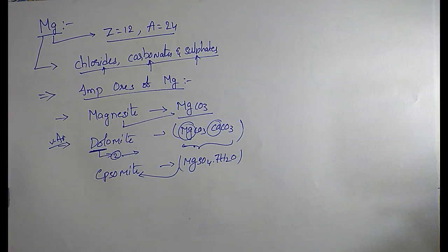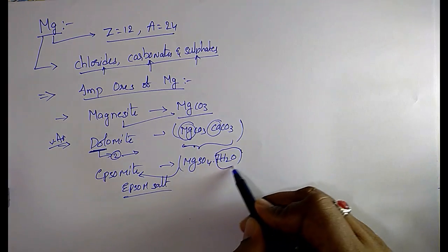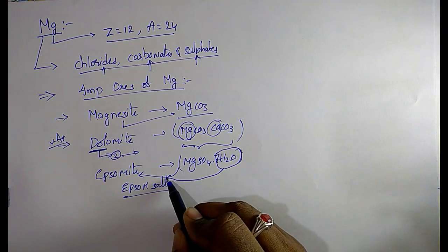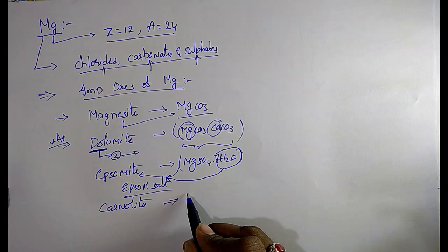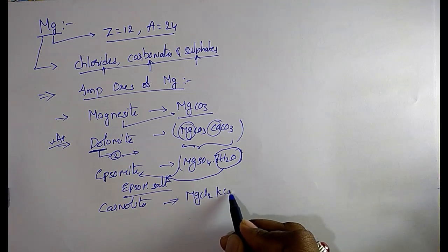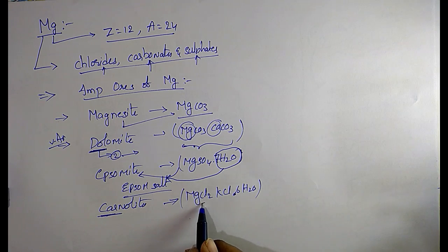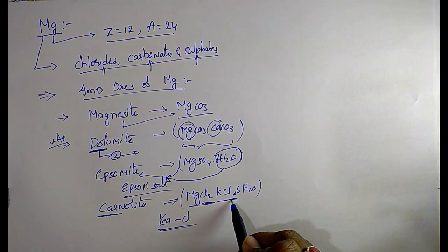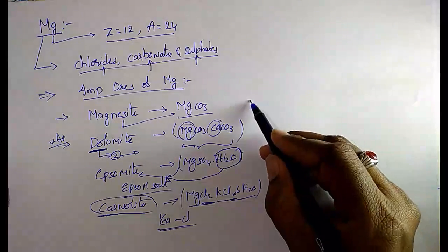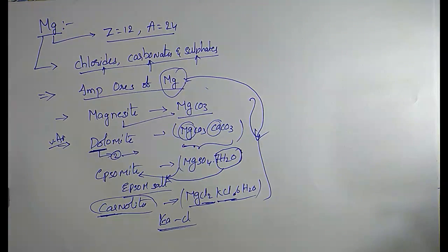The third ore is epsomite — that is magnesium sulfate with water. It is also called epsom salt. Another important one is carnallite, with chemical formula MgCl2·KCl·6H2O. To remember carnallite: 'car' sounds like 'chlor' — it has chlorine, meaning magnesium chloride and potassium chloride with water.